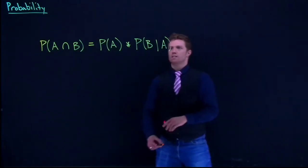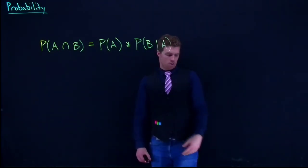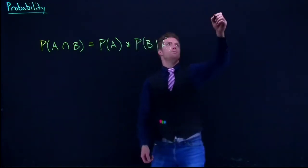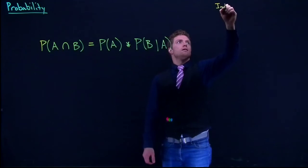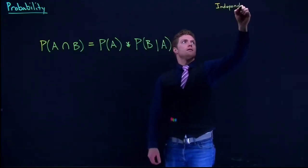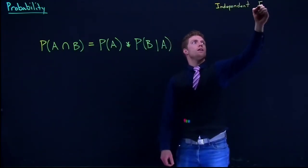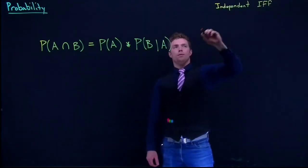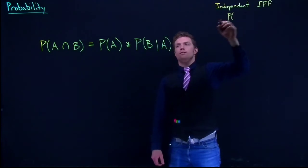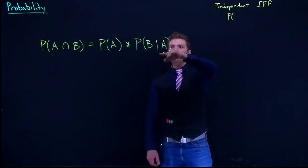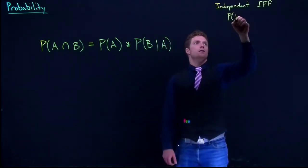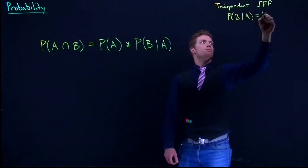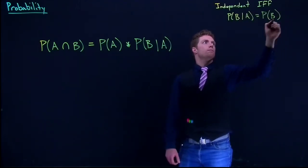and we can see that if the events are in fact independent—remember, if and only if the following is true—probability of B given A is equal to the probability of B.